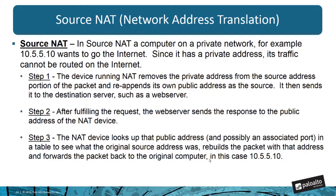Let's take a look first at source NAT. We have two different kinds of NAT: source NAT and destination NAT. In source NAT, a computer on a private network — for example, 10.5.5.10 — wants to go to the internet. It has a private address, so its traffic cannot be routed on the internet. The device running NAT removes the private address from the source portion of the packet and re-appends its own public address as the source. It then sends it to the destination server, such as a web server.